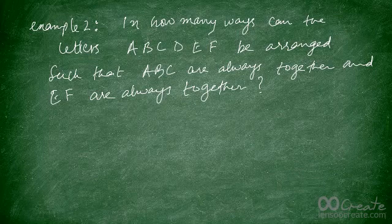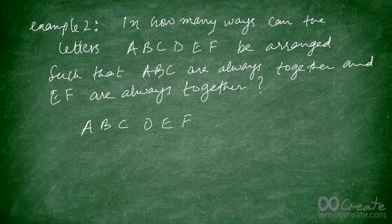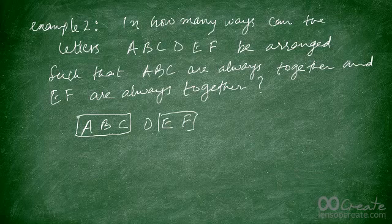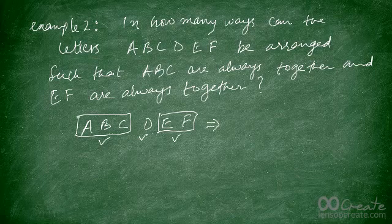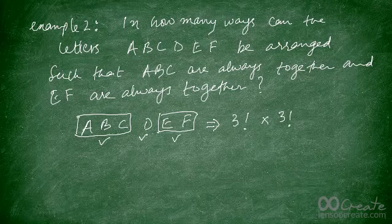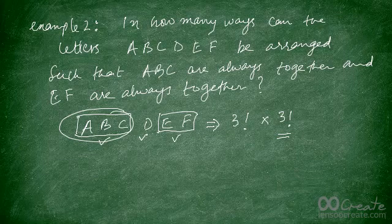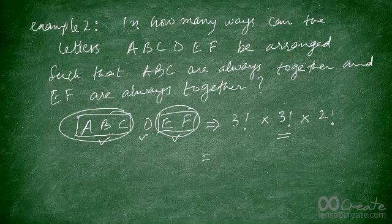Here's the solution. We have letters A, B, C, D, E, and F. We consider A, B, C as one object, D as another object, and E, F as a third object. Their arrangements would be three factorial. But A, B, C within themselves can also be rearranged in three factorial ways, and E and F can be arranged in two factorial ways. So multiplying: 3! × 3! × 2! = 6 × 6 × 2 = 72. That's your answer.